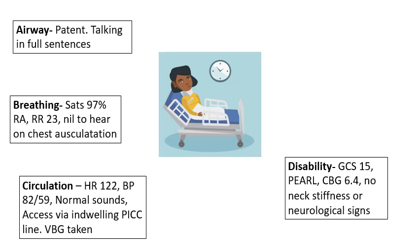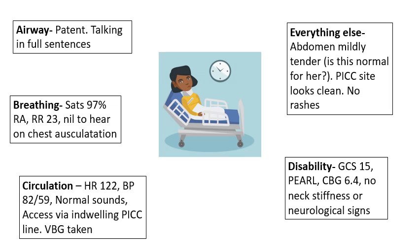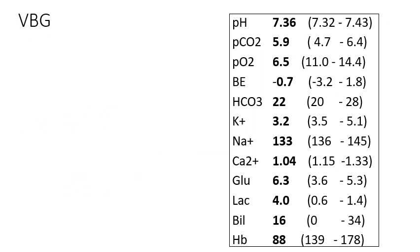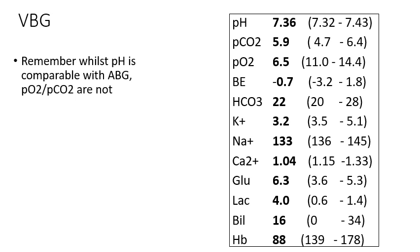For D: her GCS is normal, pupils are equal, blood glucose is fine, and there's no suggestion of meningism — no neck stiffness, no focal neurology. For E: her abdomen is mildly tender — remember her background of Crohn's, so this may be normal for her. Her PICC site looks clean; do a thorough inspection for erythema around the entry site, any pus, anything like that, and a quick look for any rashes.